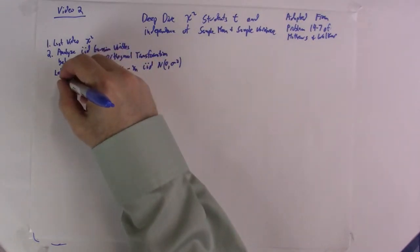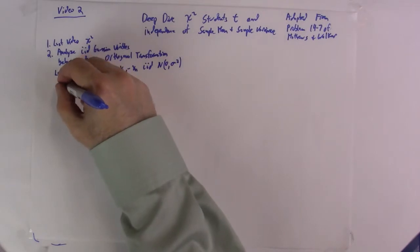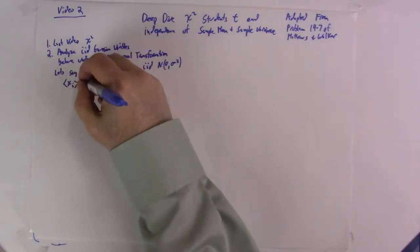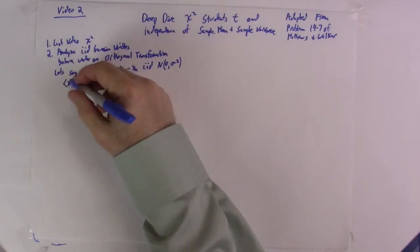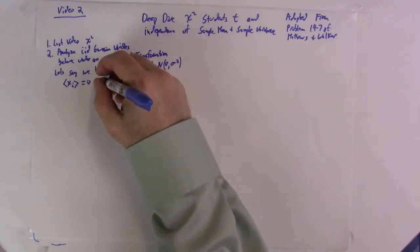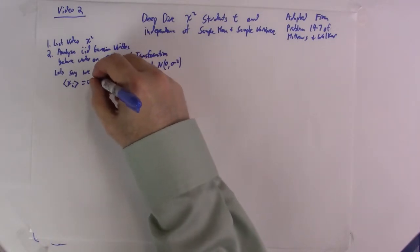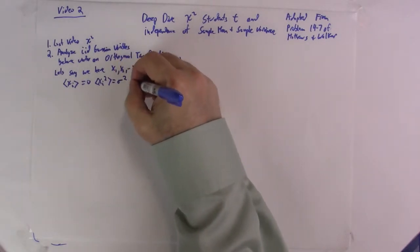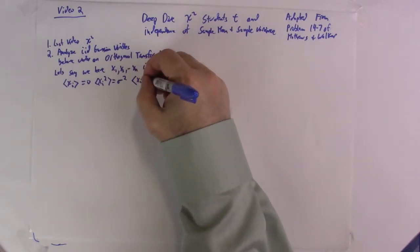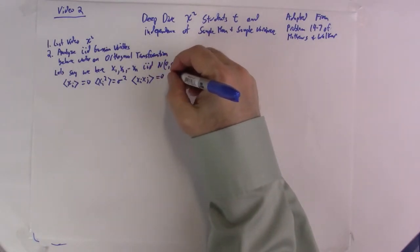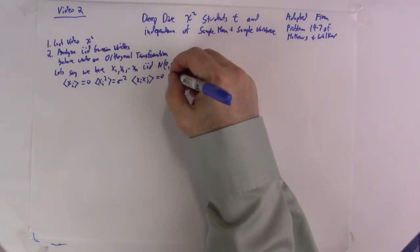This means: the mean of xi equals zero (this is how physicists write expectations), the mean of xi squared equals sigma squared, and the covariance of xi and xj is equal to zero for i not equal to j.